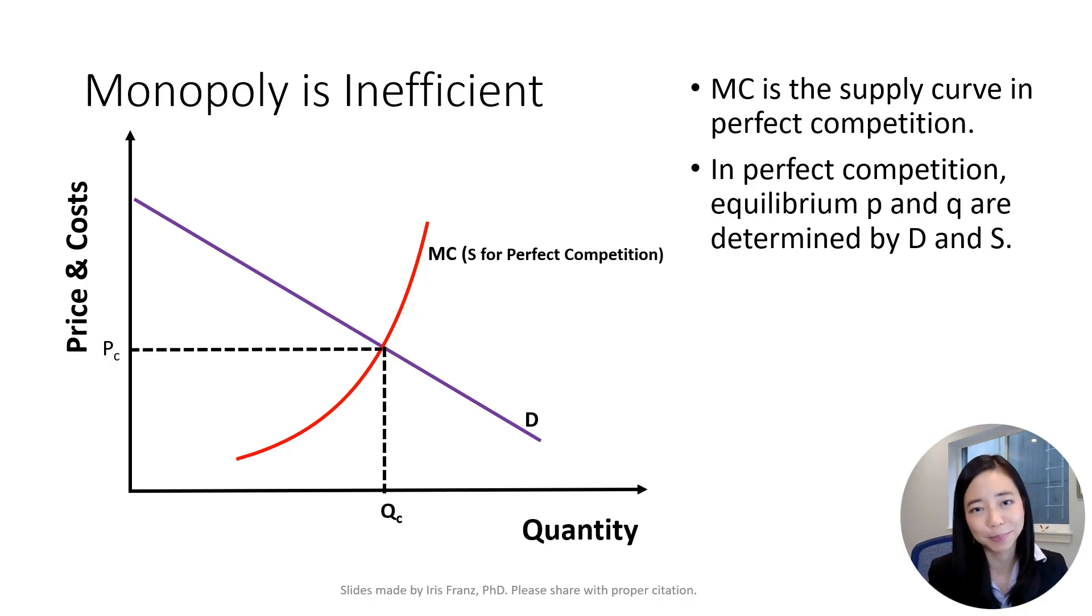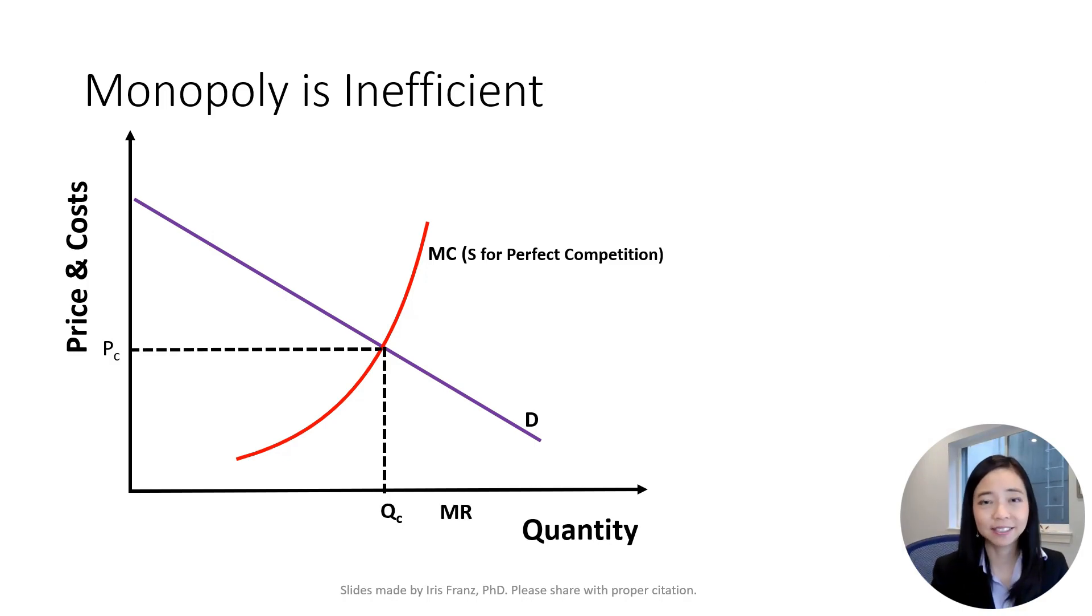C stands for competition. But instead of competition, we have monopoly. Therefore, the monopoly sets marginal revenue to be equal to marginal cost to determine the quantity QM and sets the price PM. M stands for monopoly.